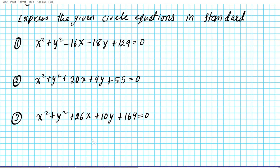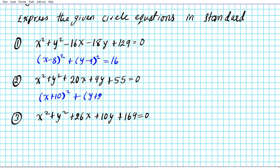Here are the answers. For question 1, the standard form is: x minus 8, quantity squared, plus y minus 9, quantity squared, equals 16. For number 2: x plus 10, quantity squared, plus y plus 2, quantity squared, equals 49. For number 3: x plus 13, quantity squared, plus y plus 5, quantity squared, equals 25. If you had any problems with these answers, feel free to post a comment and we'll be glad to help.